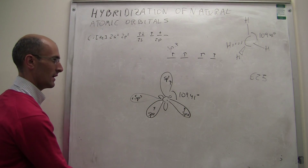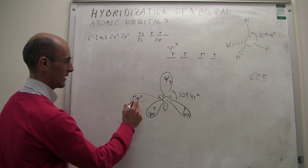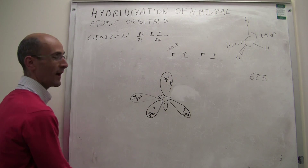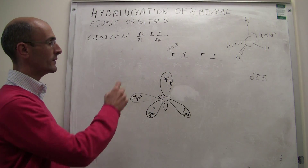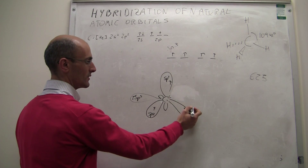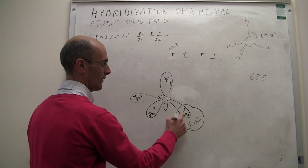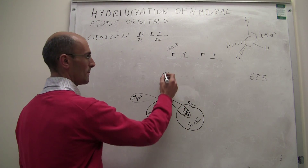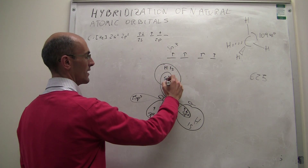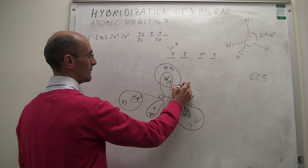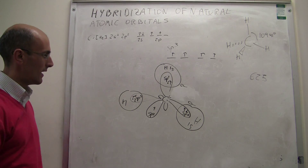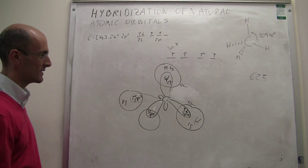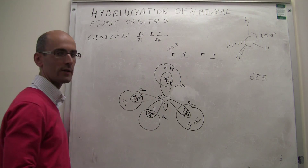We can use valence bond theory to see the bonding configuration for methane. Once you have these sp3 orbitals for carbon, each orbital overlaps with the 1s orbital of a hydrogen atom that has one electron to form a sigma bond — and the same thing happens with the rest of the hydrogen atoms in the molecule. All four bonds are due to sigma overlaps between the 1s wave functions of the hydrogen atoms and the singly-occupied sp3 wave functions of carbon. That's the valence bond theory diagram for methane after explaining sp3 hybridization.